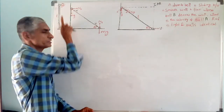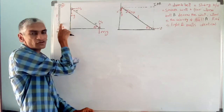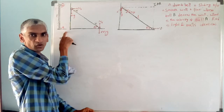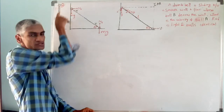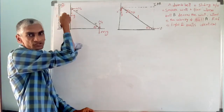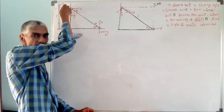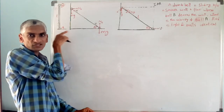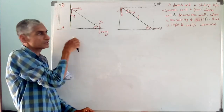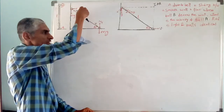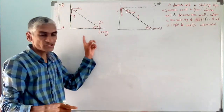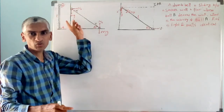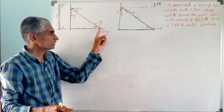Two identical balls A and B are attached to the ends of a light rod. This is a smooth wall and it is a smooth floor. This rod system is released from the vertical position to slide between the wall and the floor, so that ball A is given a slight impulse and the system starts sliding. The question is: when the upper ball is about to leave the wall, what is the velocity of the lower ball?